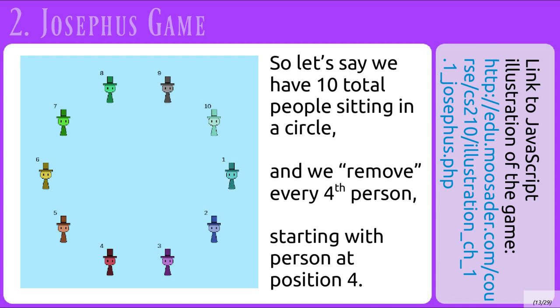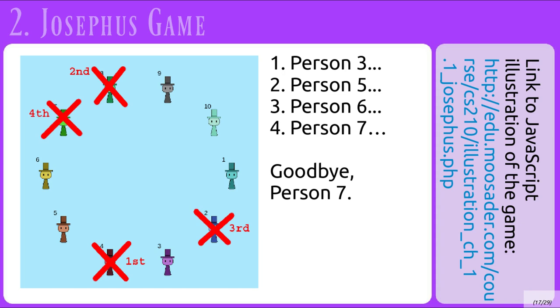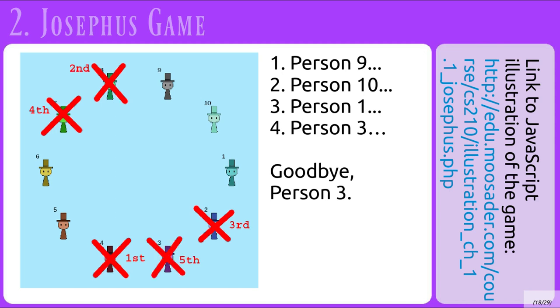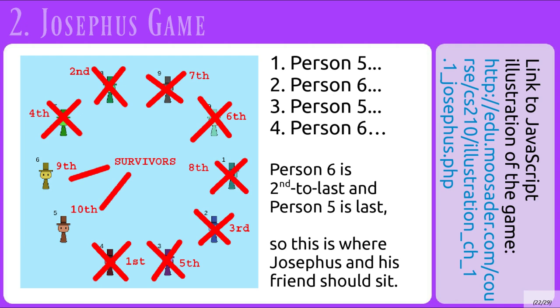Let's run through an example. Let's say we have ten people sitting in a circle, and we remove every fourth person. So we start with the person at position four — goodbye four. Then we count to the next fourth person: five, six, seven, and eight — goodbye person eight. We keep counting by fours: goodbye person two, goodbye person seven, goodbye person three, goodbye person ten, goodbye nine, goodbye person one. The last two are left. Person number six will be the ninth to go, and person number five will be the tenth to go. So this is where Josephus and his friend should sit.